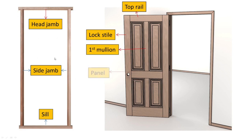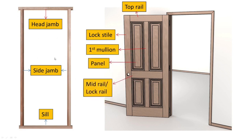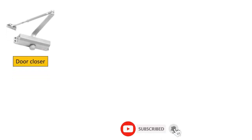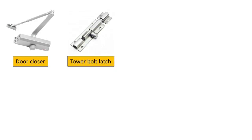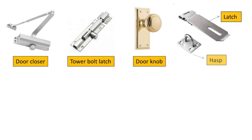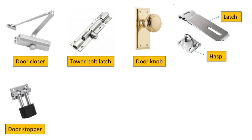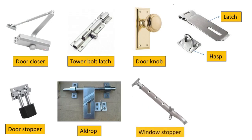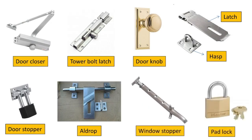Head mullion. Panel. Mid rail or locker rail. Bottom rail. Hinge tight. Hinge. Door closure. Tower bolt latch. Door knob. Latch. Hasp. Door stopper. All drop. Window stopper. Padlock.